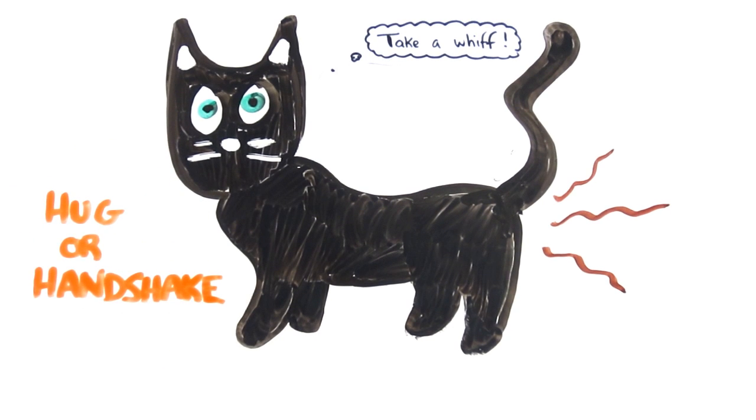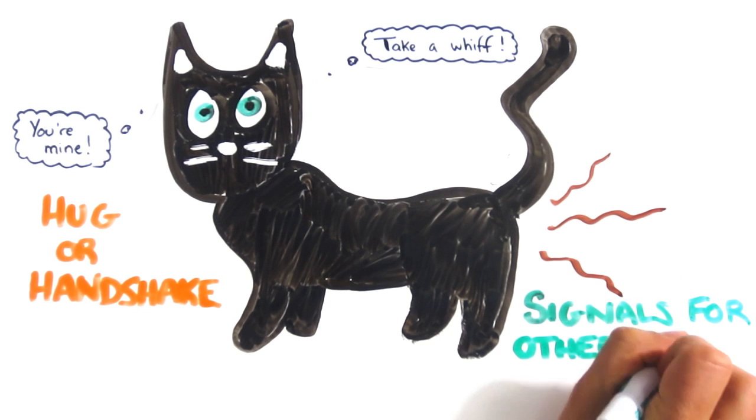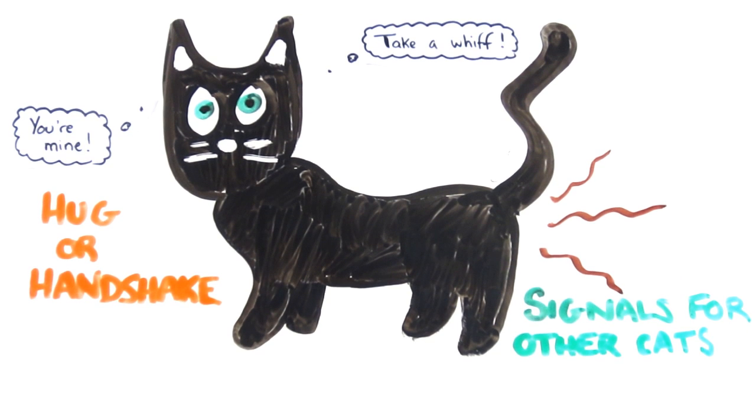They also rub up against you to spread these pheromones. The glands on their face, tail and body help them to claim you with their scent, while also leaving nearby cats signals about their identity, sexual availability and territory.